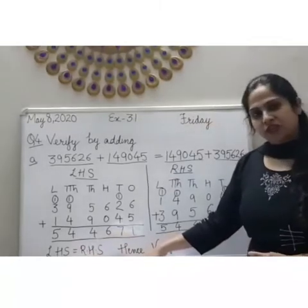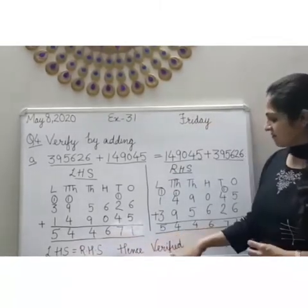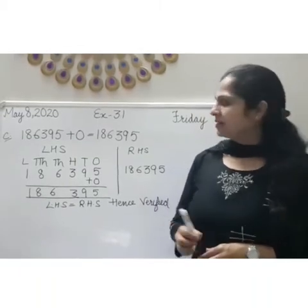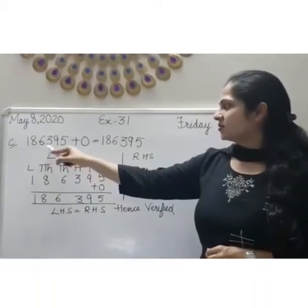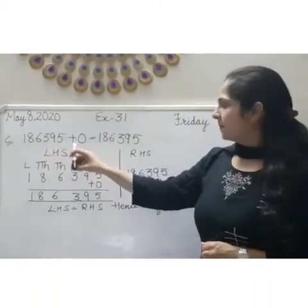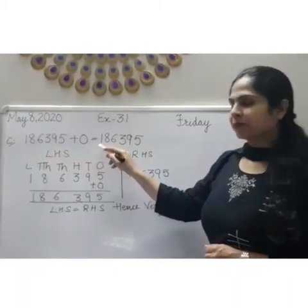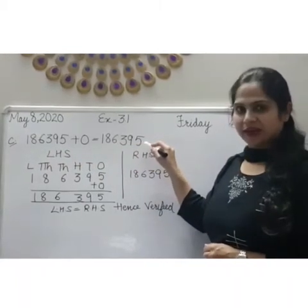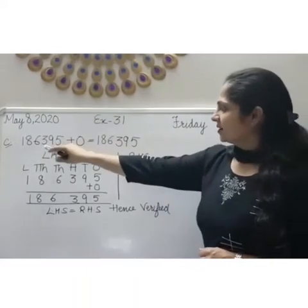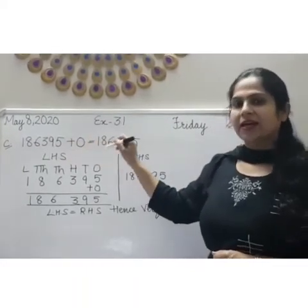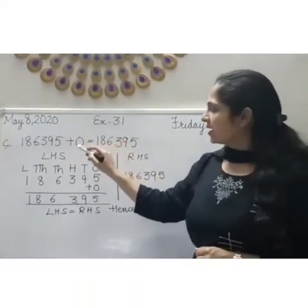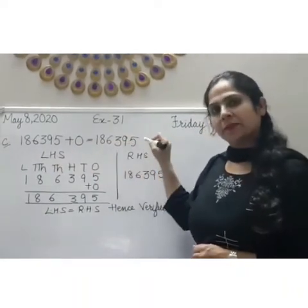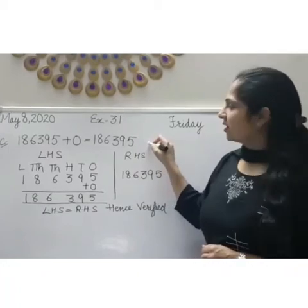So order property of addition is verified. Now children, we are doing Part C. Part C is: 186395 plus 0 is equal to 186395. That is the zero property. In zero property, if we add 0 to any number then we get the sum that is the number itself.